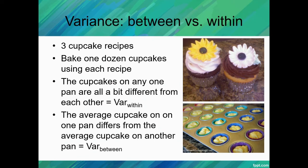We also have the average cupcake on one pan differs from the average cupcake on another pan. So the 12 cupcakes on pan A are going to be slightly different than the 12 cupcakes on pan B, which would also be slightly different than the cupcakes on pan C. So the difference from pan A to pan B to pan C - that's our variation between.